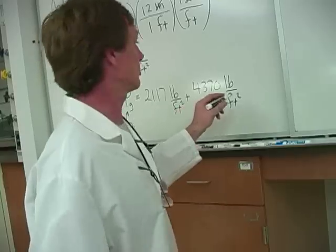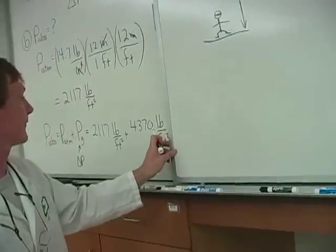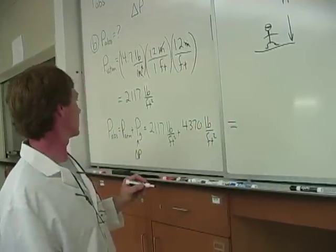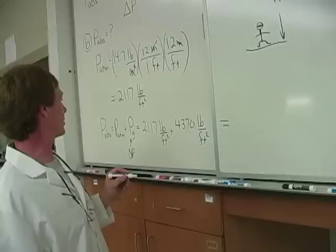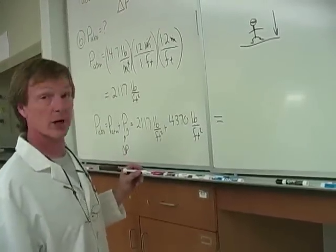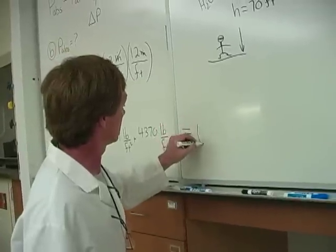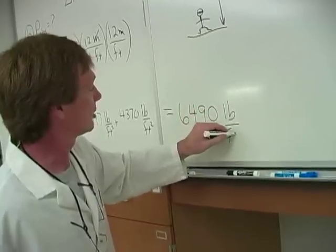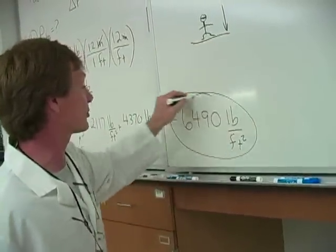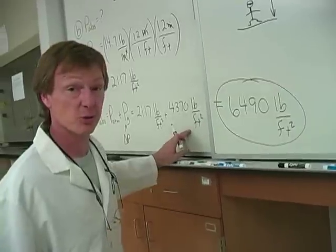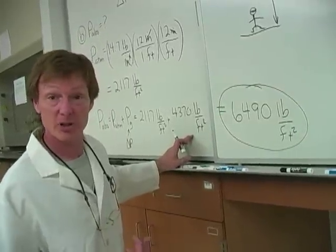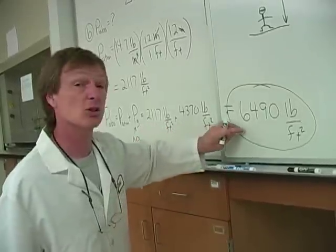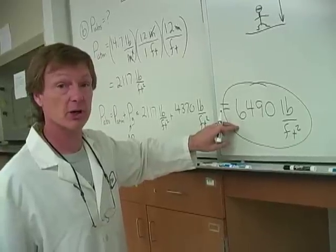And that's going to give me 6,487. So about 6,490 pounds per square foot. I'll circle that. That's my absolute pressure. My gauge pressure is 4,370 pounds per square foot. And that's due to being underwater. But there's air on top of that, 2,117 pounds per square foot worth. I add them together, I get the total absolute pressure, 6,490 pounds per square foot.